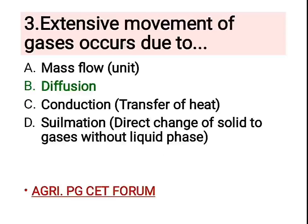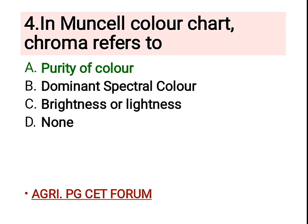Third question: the extensive movement of gases occurs due to — and the right answer is B, diffusion. Other options are: mass flow, which is basically bulk flow; C, conduction, which means transfer of heat; and sublimation, which means the direct change of solid into gas in which the liquid phase is absent.